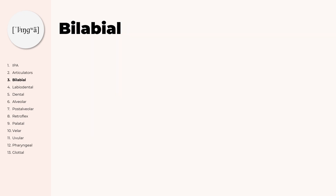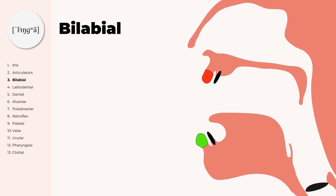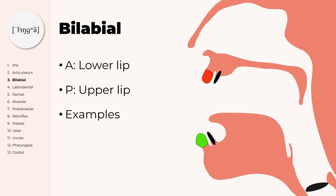Let's start with the bilabial consonants. On this image we can see the places of articulation. In green we see the active articulator, the lower lip, and in red we see the passive articulator, the upper lip. Examples for bilabial sounds are P, B, and M. If you pronounce them, you should feel that your two lips — the lower and the upper lip — are touching.